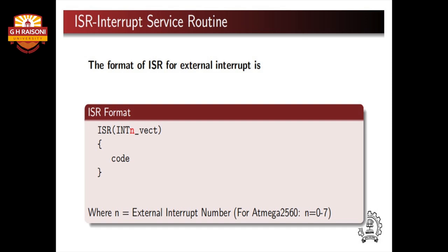To call the ISR — Interrupt Service Routine — we need to first initialize it. The format for an external interrupt ISR is: ISR followed by brackets containing the interrupt number with the VECTOR underscore vector command, then curly braces enclosing the code to be executed. For the ATmega 2560, the external interrupt number N can range from 0 to 7.